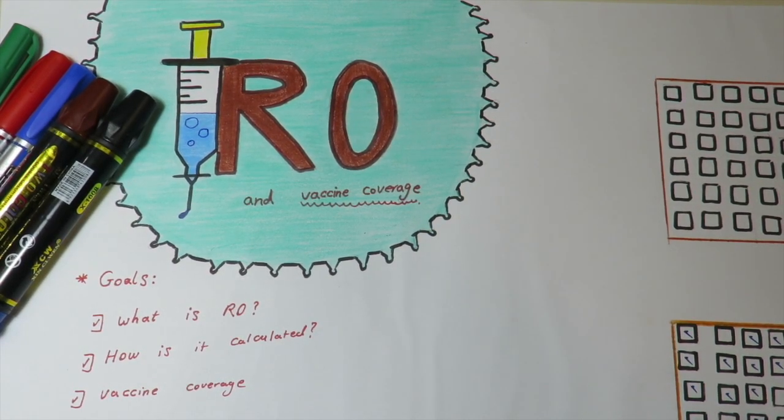Hello guys, in this tutorial we're going to briefly review what R0 is, how it's calculated, and how much vaccine coverage is needed in a population, for example, afflicted with COVID-19 pandemic. I'd be so glad if you pose any question regarding this tutorial, and please don't forget to subscribe. Let's go!